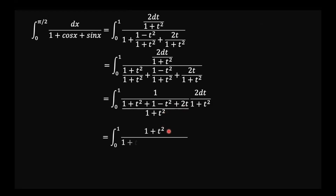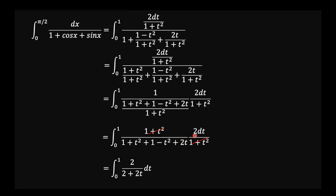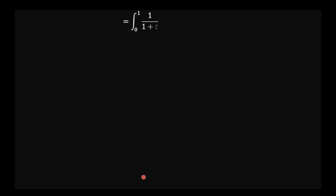The (1 plus t squared) in the denominator cancels with the (1 plus t squared) from dx. We are left with 2 in the numerator and (2 plus 2t) in the denominator. The factor of 2 cancels, so our integral reduces to the integral of 1 over (1 plus t), from 0 to 1.